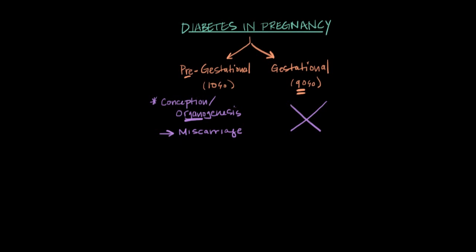That's not to say gestational diabetes doesn't harm the fetus. Diabetes as a whole, regardless of the category, can cause preterm labor, problems with the growth of the fetus, and even stillbirth. One complication that tends to be talked about a lot is fetal macrosomia.